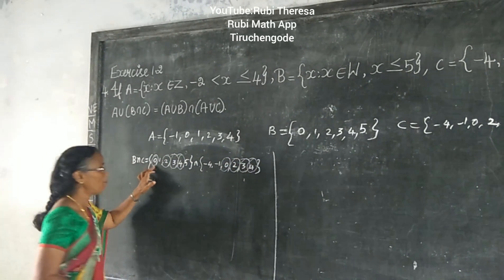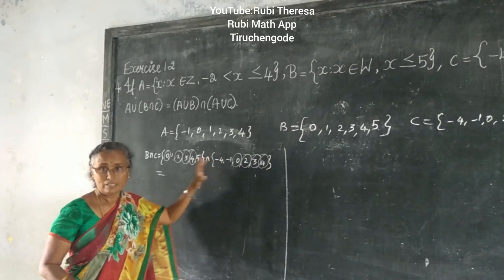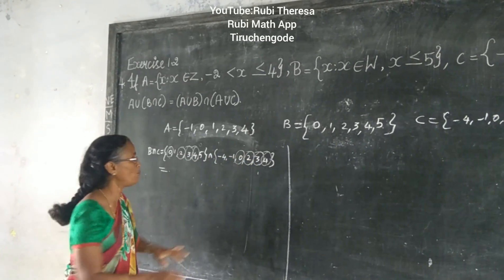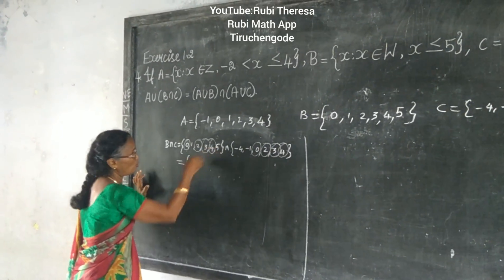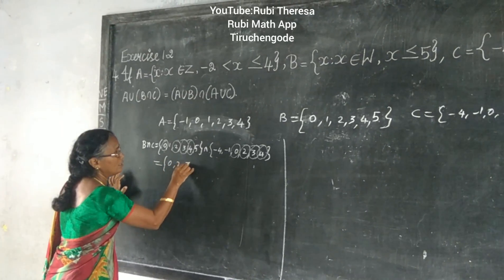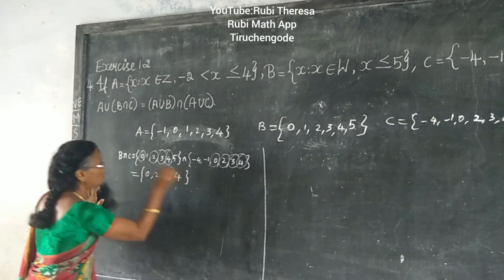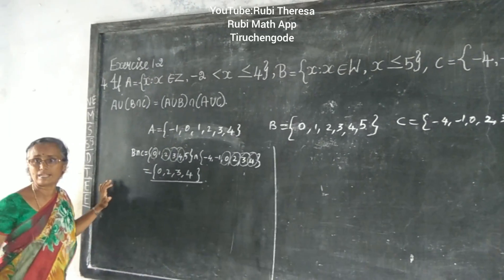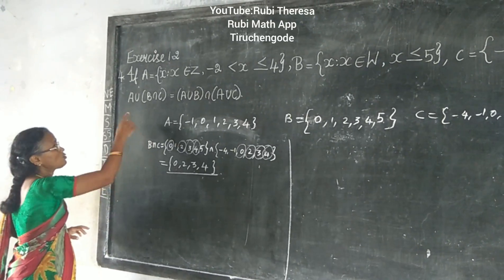It is not compulsory that you must draw a circle — that is just for understanding. For slower learners, doing this helps. Those who know the answer can write it directly. The answer is 2, 3, 4 — just underline the answer, always.